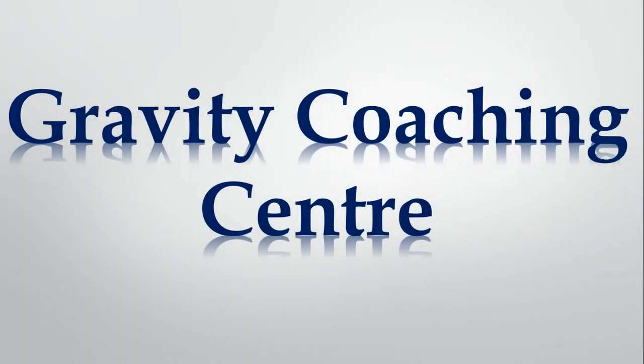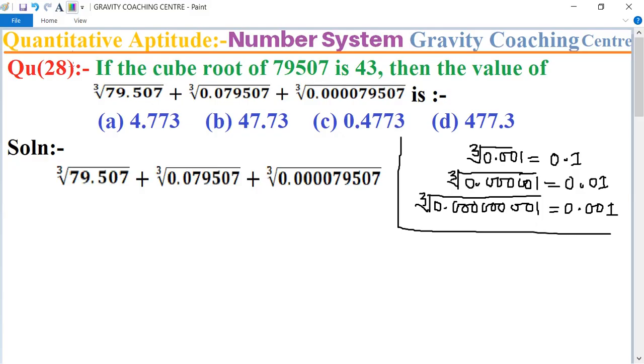Welcome to our channel, Gravity Coaching Centre. In Quantitative Aptitude, chapter Number System, question number 28: If the cube root of 79507 is 43, then the value of the given expression. In this question we use this concept.